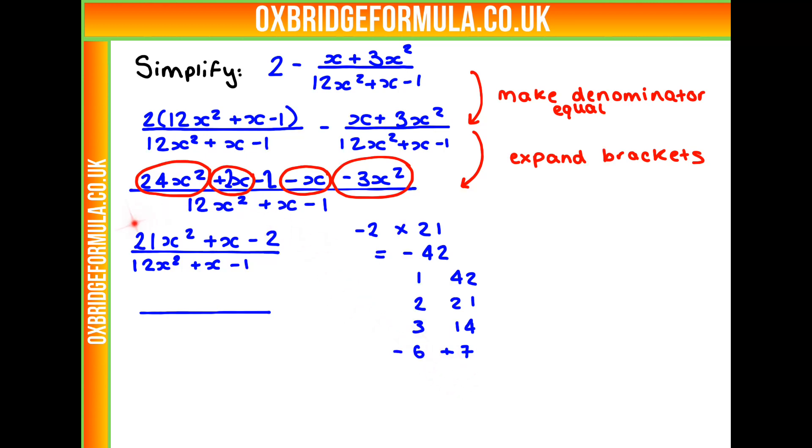So now what we're going to do is we're going to rewrite this equation, but using these as our values for x. So we've got 21x squared minus 6x, and then we're going to split that, and we've also got 7x minus 2.